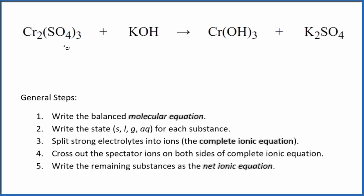Let's write the balanced net ionic equation for Cr2(SO4)3 plus KOH. This is chromium(III) sulfate, and here we have potassium hydroxide. The first thing we need to do is balance the molecular equation.